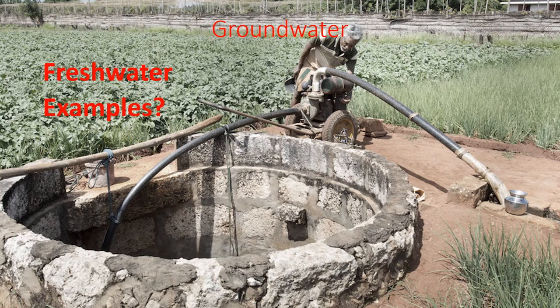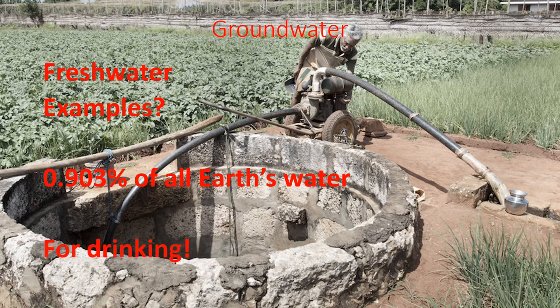Examples of groundwater are all the different types of aquifers. There's the Helena Valley aquifer — if you live out in the valley, your well at your house is drilled into the Helena Valley aquifer. There's also a really big aquifer present in about nine of the Midwestern states called the Ogallala aquifer. 0.903% of earth's water is found in groundwater. So of that little bit that wasn't in the ocean or frozen as ice, almost all of that is underground in the groundwater supply.